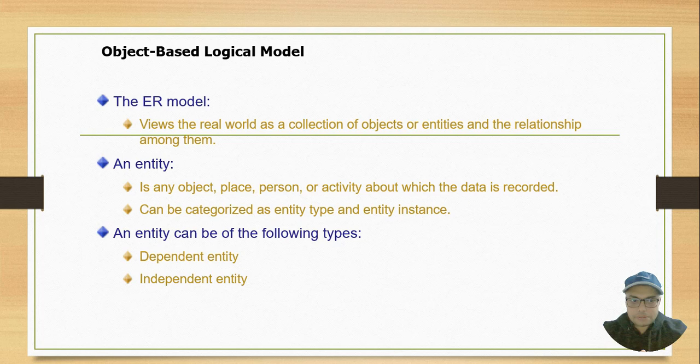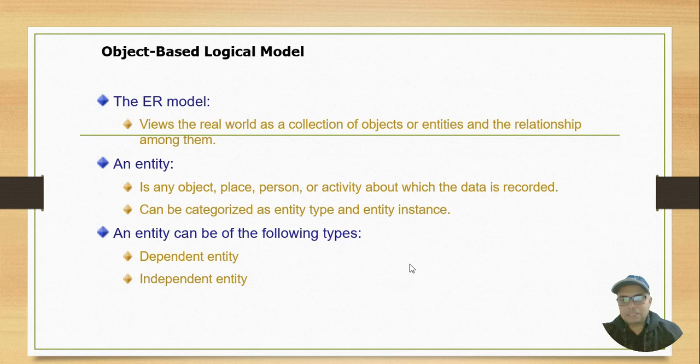An entity can be of the following types: dependent entity and independent entity. Suppose you are a student and your parents are paying for you. Once you complete your studies and get a job, you start earning. In that case, you become independent because you are earning yourself, surviving yourself, and managing your family yourself.